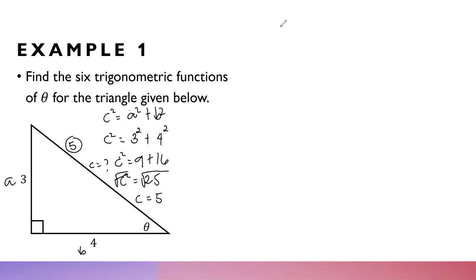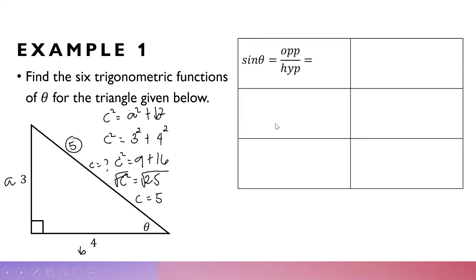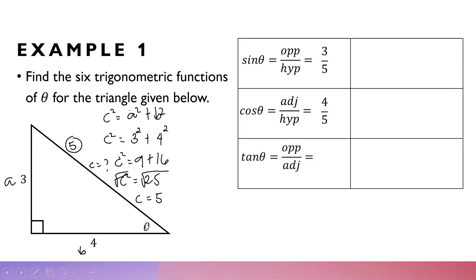Now let us find the six trigonometric functions of this right triangle. Sine is opposite over hypotenuse. With theta as our angle, the opposite side is 3 and the hypotenuse is 5, so sine theta equals 3 over 5. Cosine is adjacent over hypotenuse: the adjacent is 4 and the hypotenuse is 5, so cosine theta equals 4 over 5. Tangent is opposite over adjacent: 3 over 4. Cosecant is hypotenuse over opposite — just the reciprocal of sine — so cosecant theta equals 5 over 3.